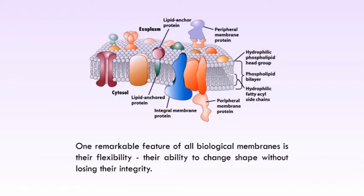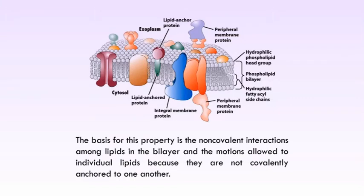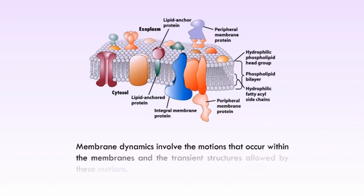One remarkable feature of all biological membranes is their flexibility — their ability to change shape without losing their integrity. The basis for this property is the non-covalent interactions among lipids in the bilayer, and the motions allowed to individual lipids because they are not covalently anchored to one another. Membrane dynamics involve the motions that occur within the membranes, and the transient structures allowed by these motions.